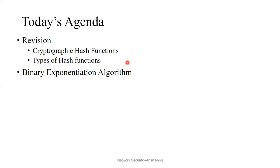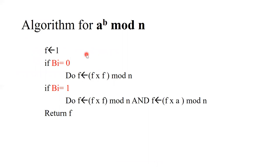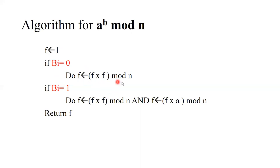So let's start with the binary exponentiation algorithm. This algorithm says that if you want to find a raised to power b mod n of any number, then you need one function that is f. And f is similarly the index value of different numbers. If the index value b of i is equal to zero, then you have to do the multiplication of both numbers and return it to f by calculating mod n.